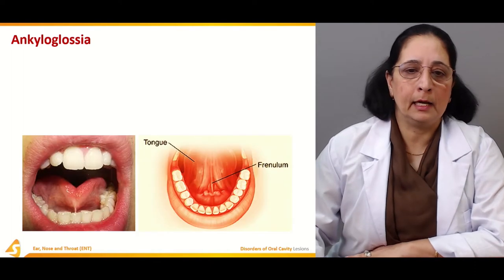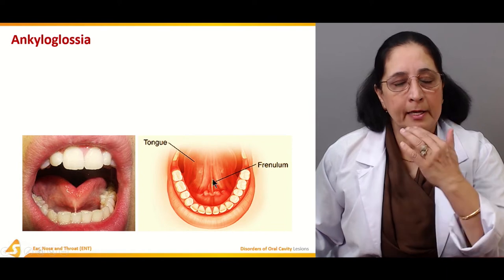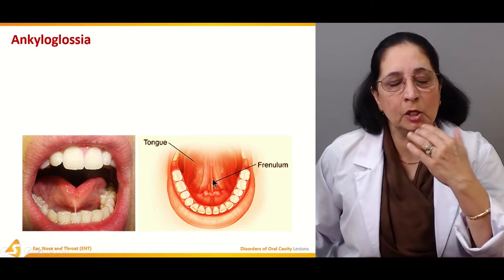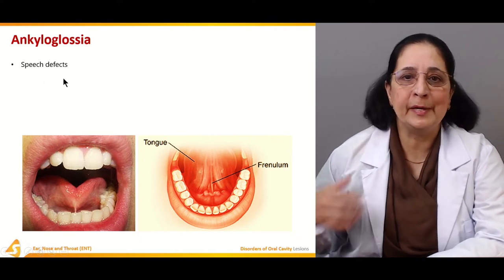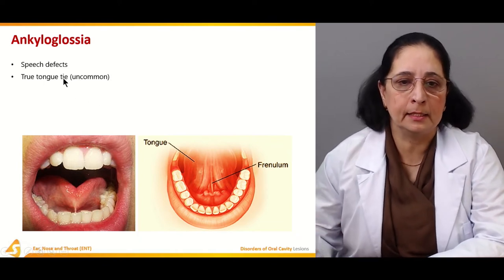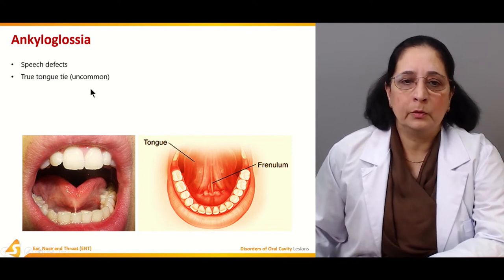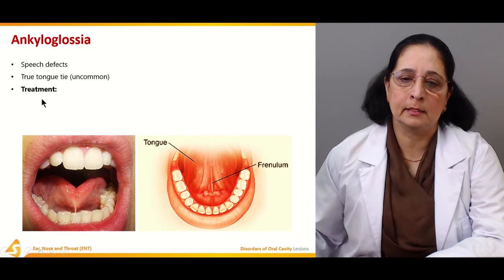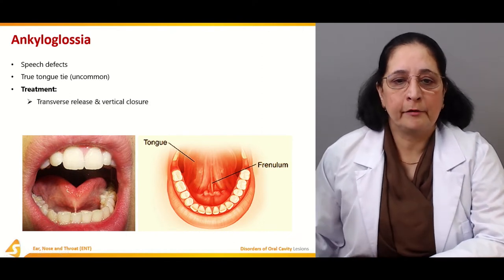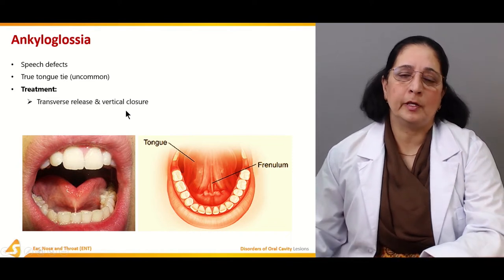Then ankyloglossia. This is the tongue and this is the frenulum that attaches the tongue to the floor of the mouth. In ankyloglossia there are speech defects present. True tongue tie is uncommon in this condition. There is a speech disorder, and the release of the tongue with vertical closure is the treatment.